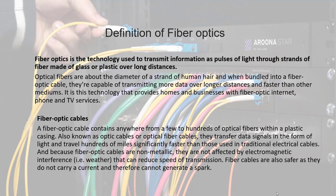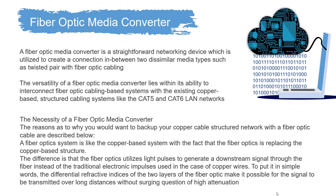Fiber cables are also safer as they do not carry a current and therefore cannot generate a spark. Regarding the Fiber Optic Media Converter — an important component in SMATF — a fiber optic system is like the copper-based system, except that fiber optics replaces the copper-based structure. Fiber optics utilizes light pulses to generate a downstream signal through the fiber instead of traditional electronic impulses used in copper wires. The differential refractive indices of the two layers of the fiber optic make it possible for the signal to be transmitted over long distances without high attenuation.